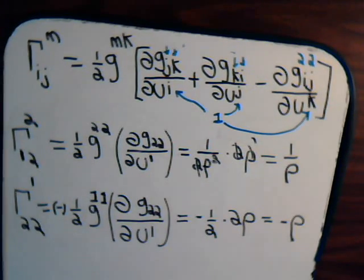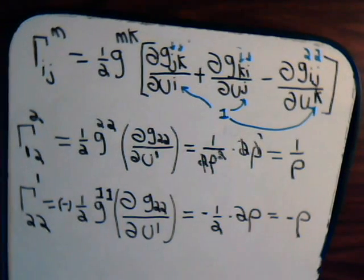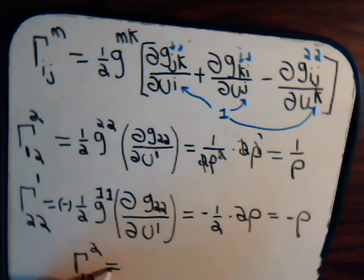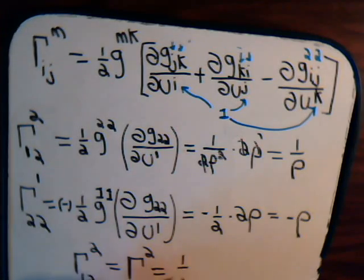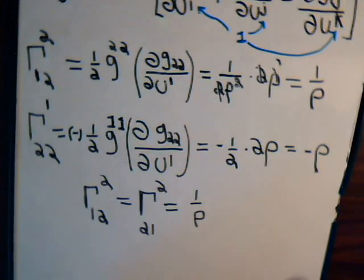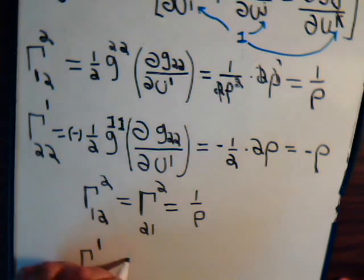And there we are, we're finished. So, we have determined three Christoffel symbols. We have gamma 1, 2, 2, equals gamma 2, 1, 2. So, we have gamma 2, 2, 1, and that equaled minus rho. So, there they are.